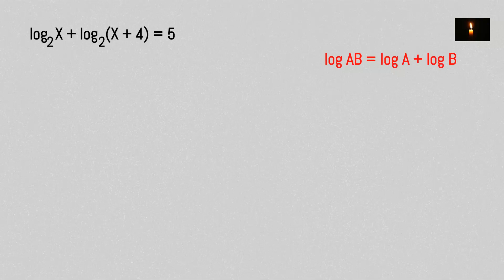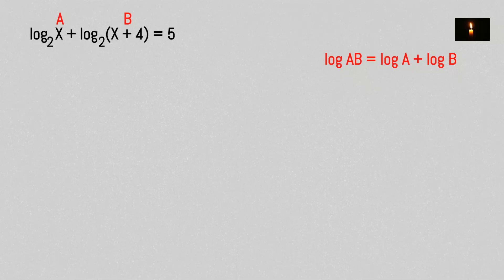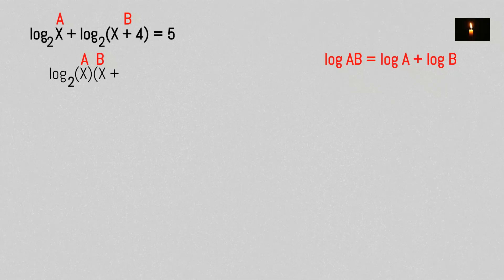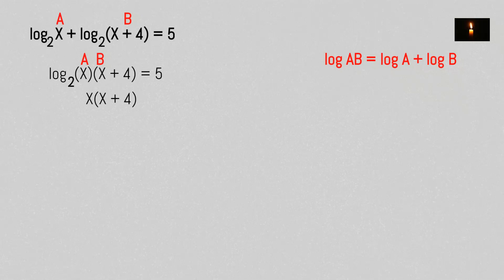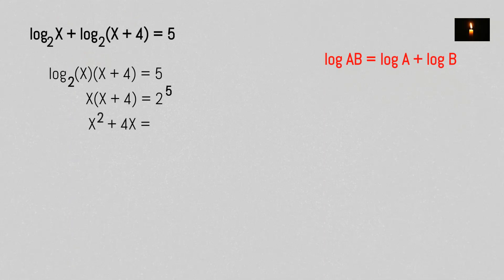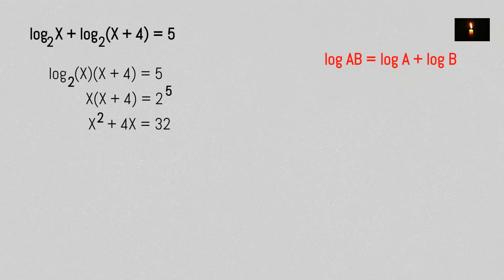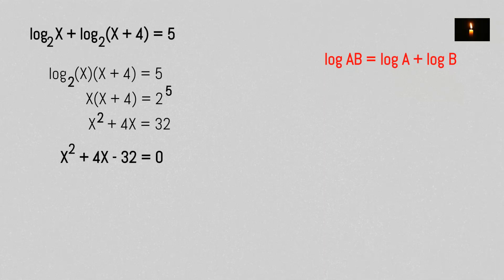The fifth property states: log(a) plus log(b) equals log(a·b). So log(x) plus log(x+4) base 2 becomes log(x(x+4)) base 2 equals 5. That means x(x+4) = 2^5 = 32, giving us x² + 4x - 32 = 0. X must be positive.